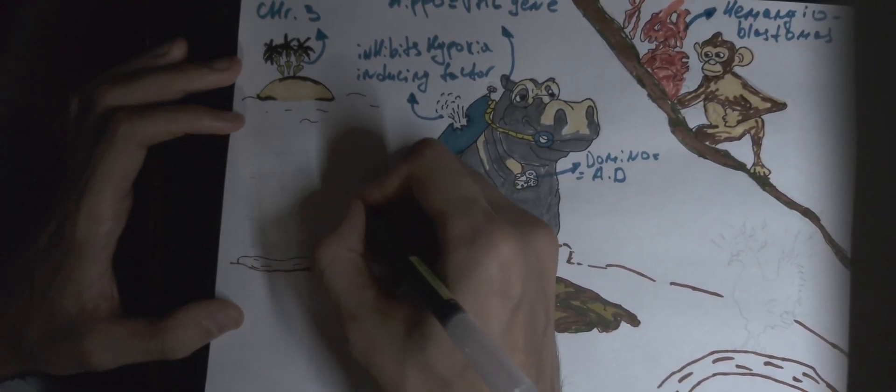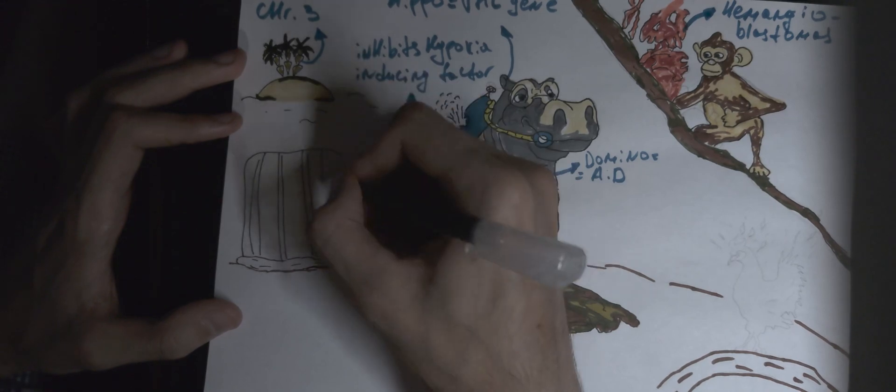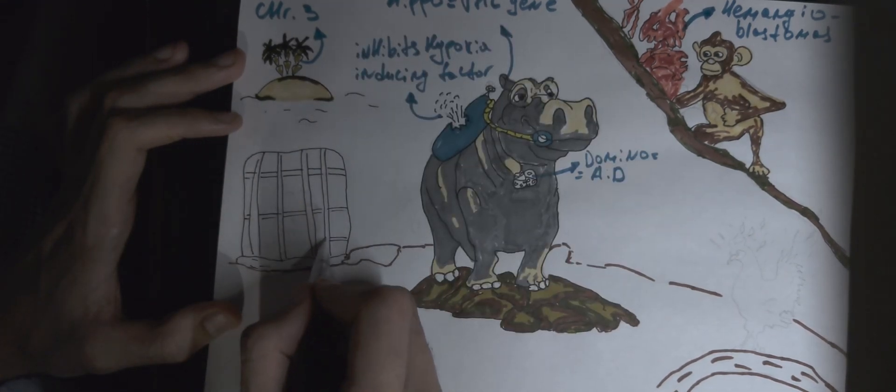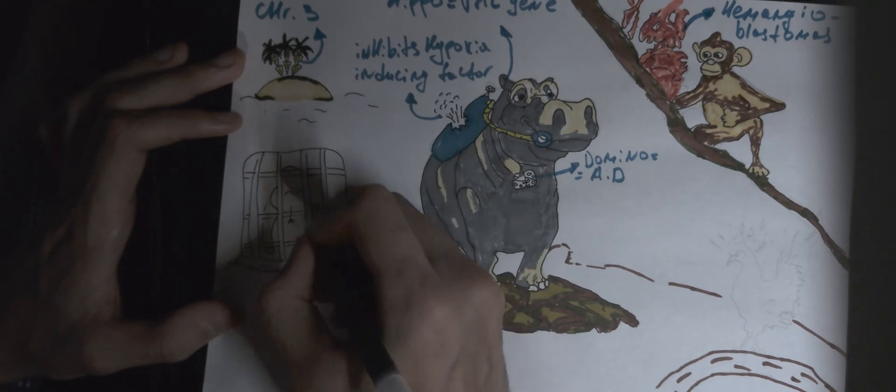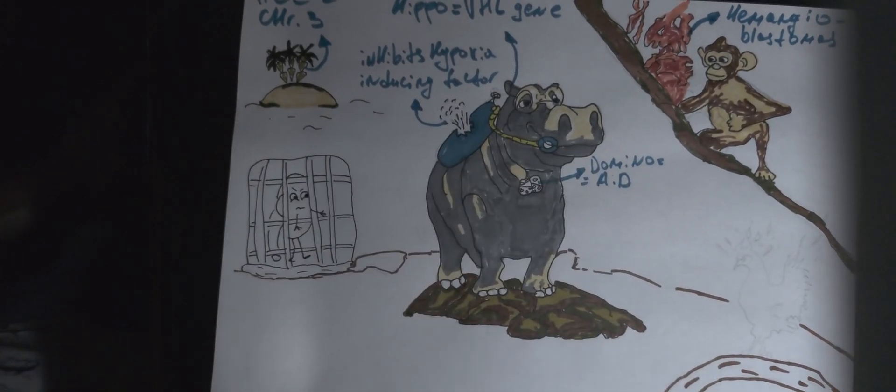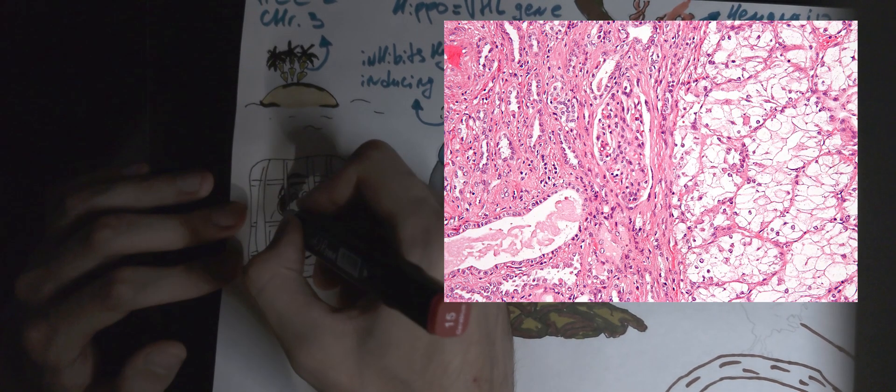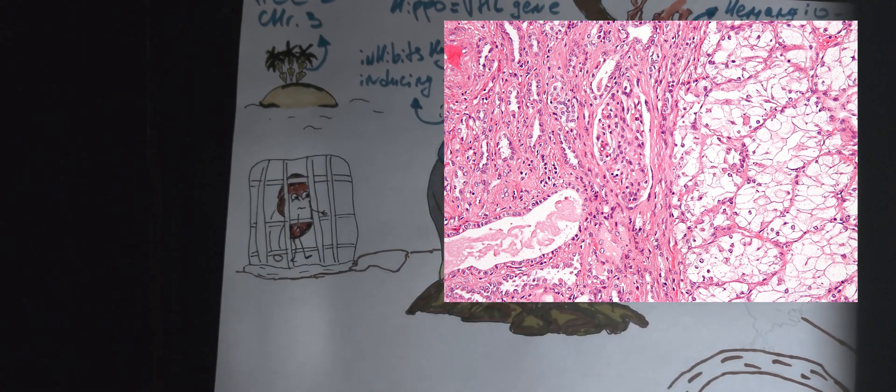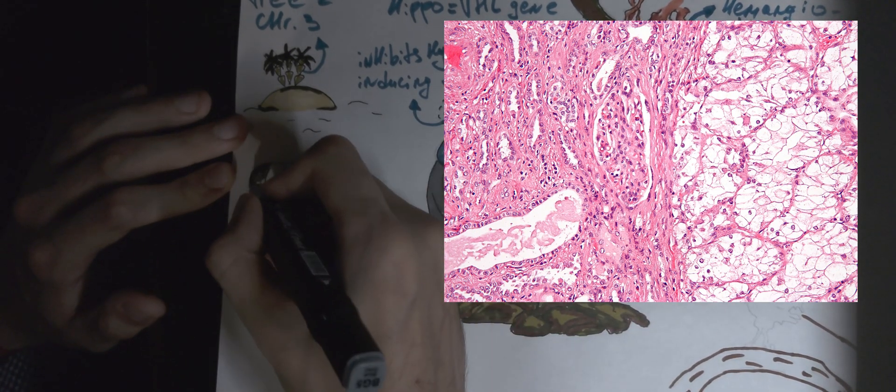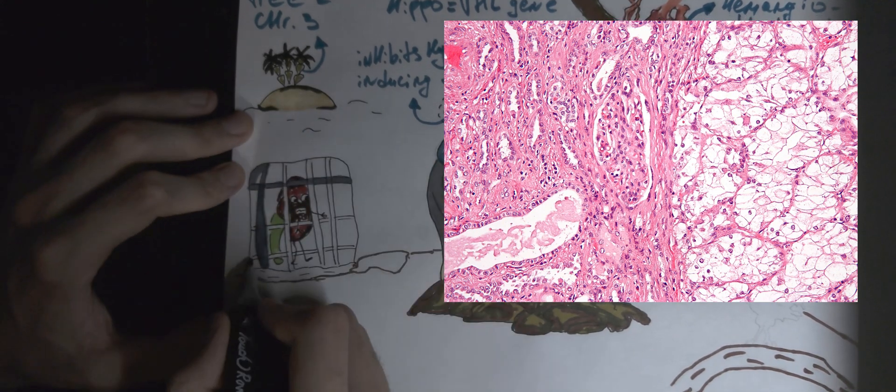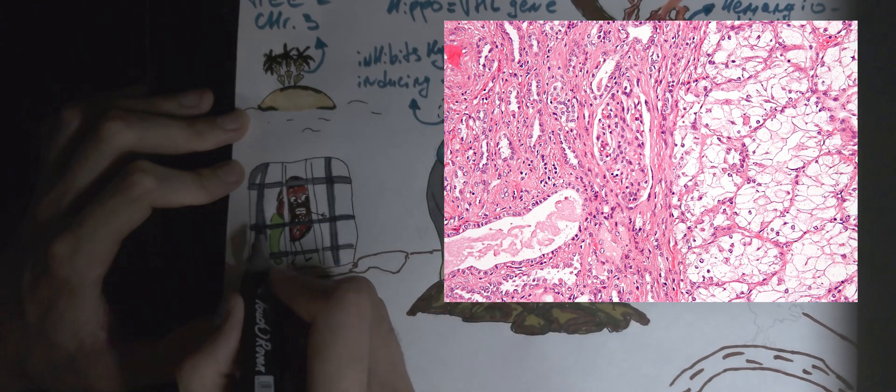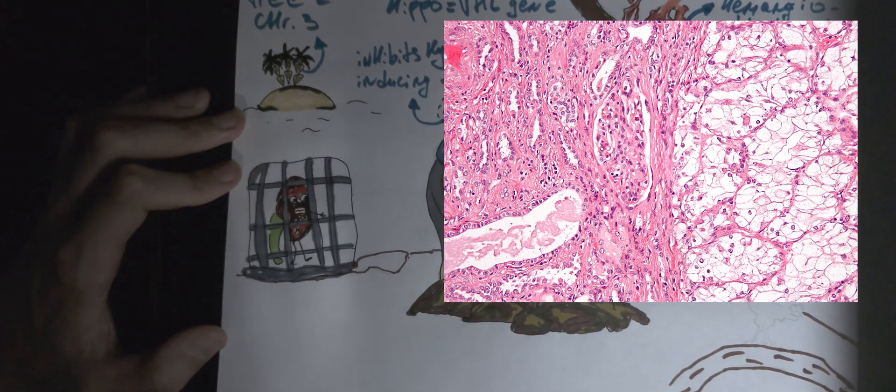Our secret agent Hippopotamus caught a dangerous criminal and imprisoned him in a cell. The criminal looks like a kidney. Kidney in the cell or renal cell carcinoma occurs in people with Von Hippel-Lindau syndrome. This is the classic clear cell histology appearance of renal cell carcinoma. The neoplastic cells have clear cytoplasm and are arranged in nests with intervened blood vessels.